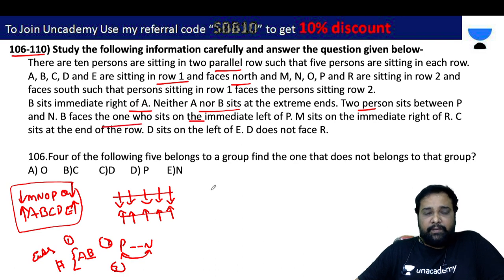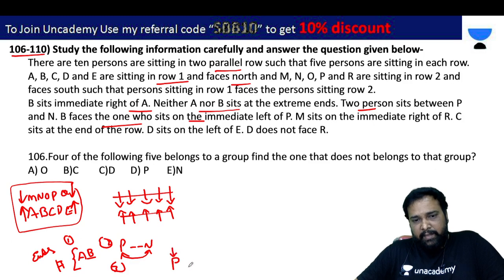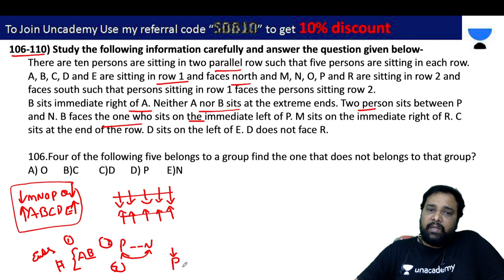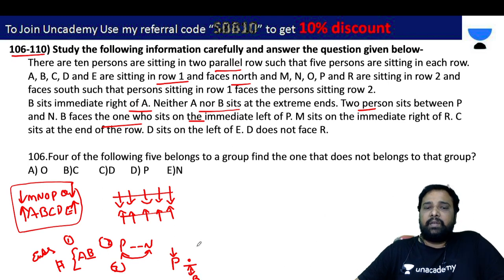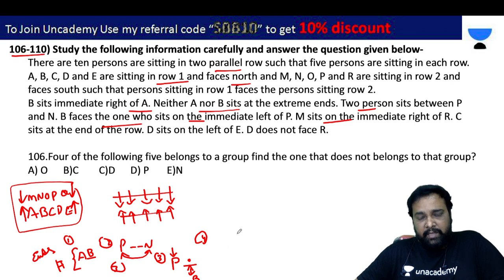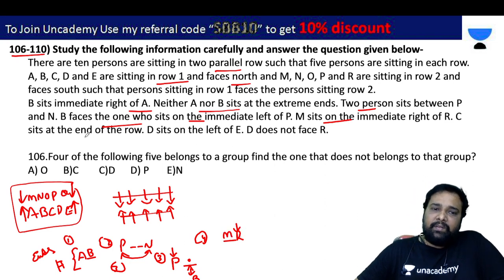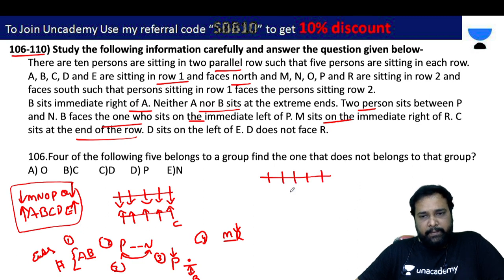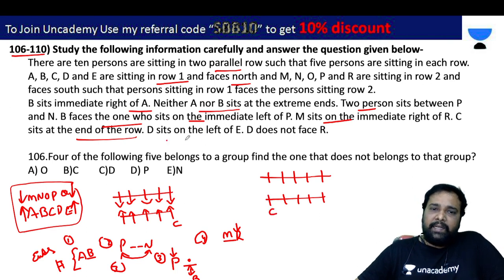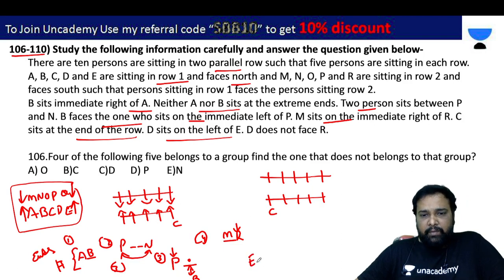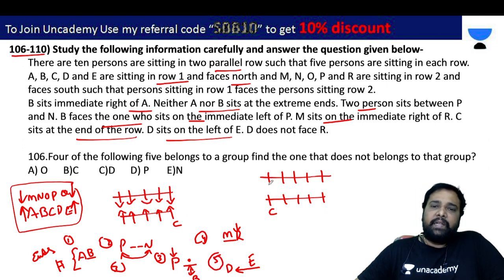N faces the one who sits immediate left of P. P's opposite person is identified. M sits to the right of R. R is the opposite of a certain person. C is at one of the ends of the row.